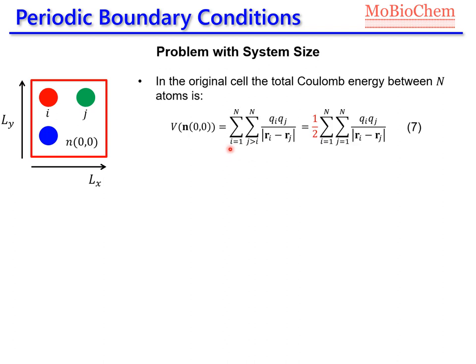Here we have the summation over all the atoms in our system. We have a second summation with this condition in order to avoid counting the interaction between the same atoms two times. Or we can write the summation without this condition, but then we divide by two, because in this way we are counting the interaction between ij and ji two times, but then we divide it by two.